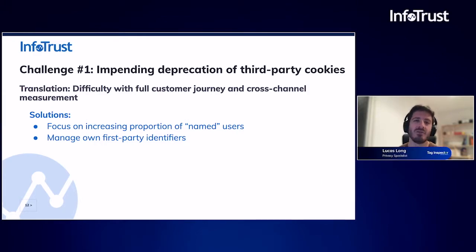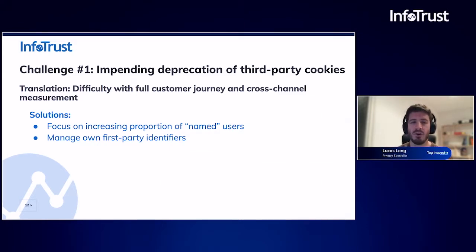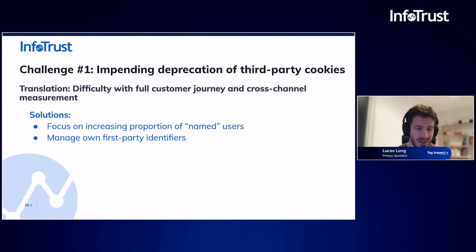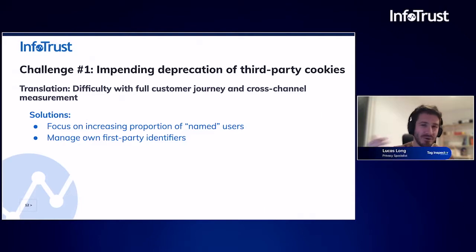The reality is, for a lot of you in the retail space, this future state is already a current state. Browsers like Safari and Firefox have already deprecated support for third-party cookies, constituting about 25% of overall internet usage. With many retailers, that proportion is far higher — we work with some partners where that proportion is up to 60% of their overall site traffic. So when you're thinking about what you're going to do when third-party cookies are gone, you're probably already doing it. It's now about refining and modifying those strategies to gain a further competitive advantage.